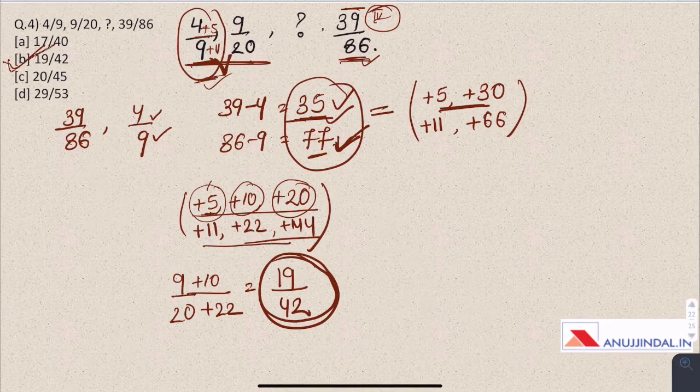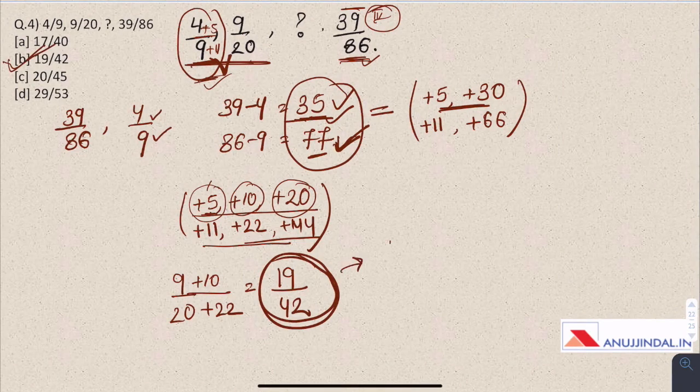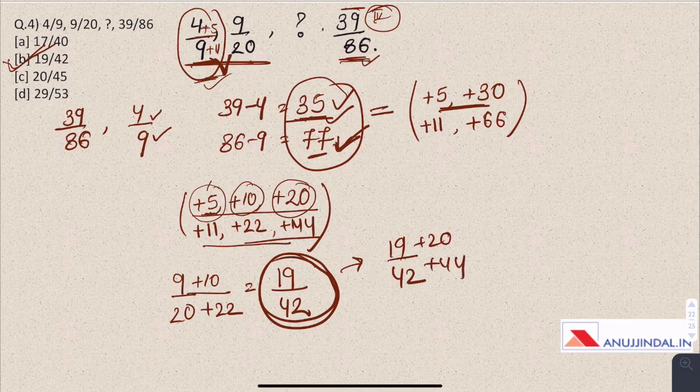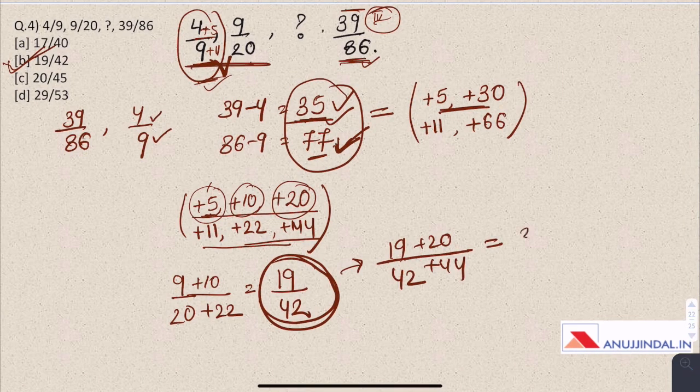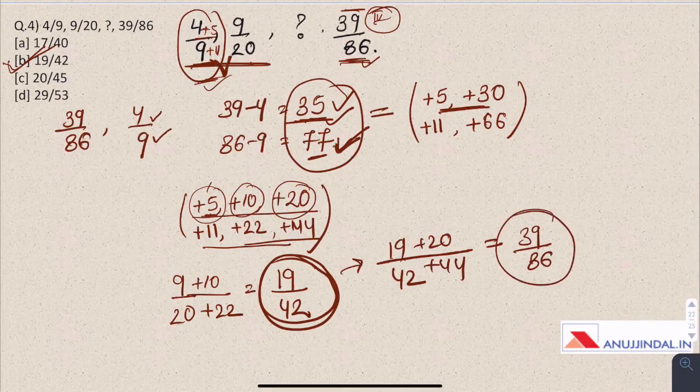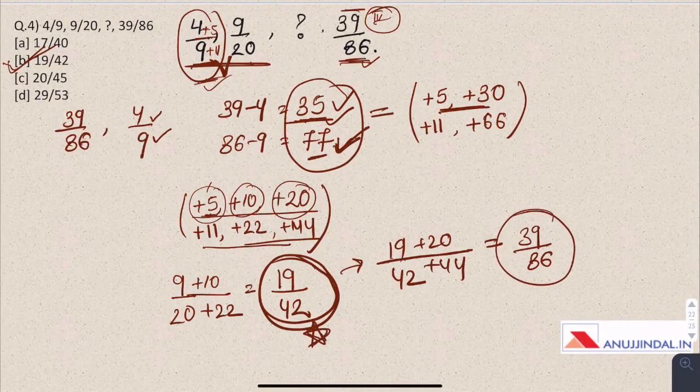This is the third term and we will also check it further: 19 by 42 plus 20 plus 44 to see if we are getting the correct answer, which is the fourth term, 39 by 86. So 19 by 42 is the correct answer, option B.